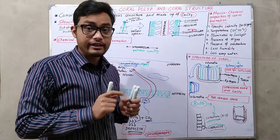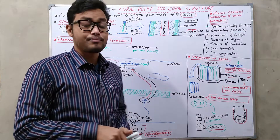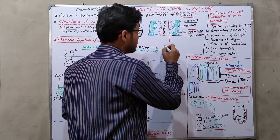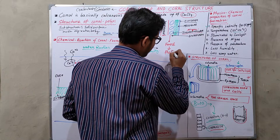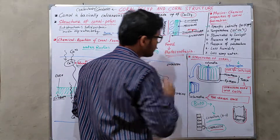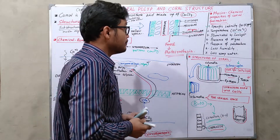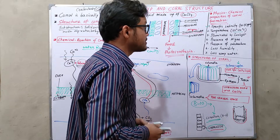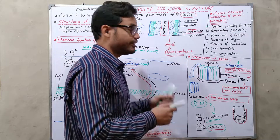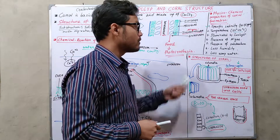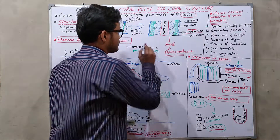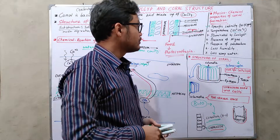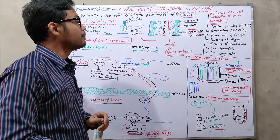Third, illumination by sunlight: sunlight is very essential because zooxanthellae produce food through photosynthesis, which requires sunlight. Fourth, the presence of zooxanthellae algae is critical — without zooxanthellae, coral cannot form. Fifth, the presence of a substratum — a solid structure below the water. Sixth, less turbidity and shallow water. These are all the parameters that help in coral formation.